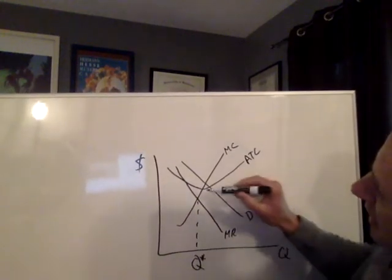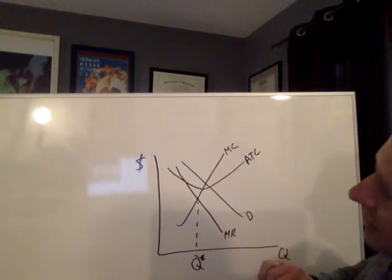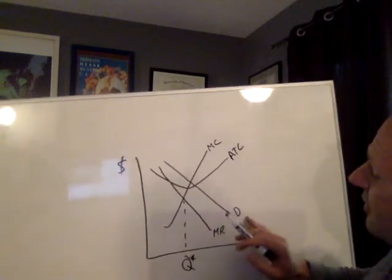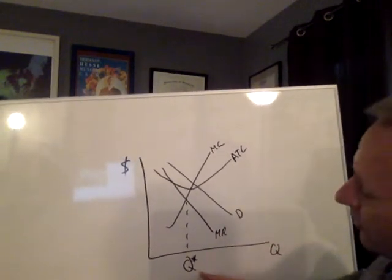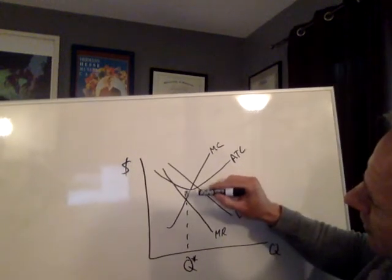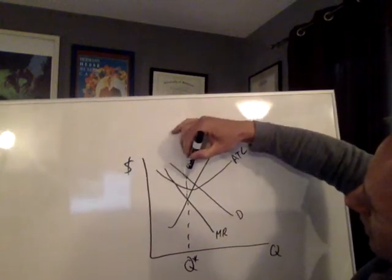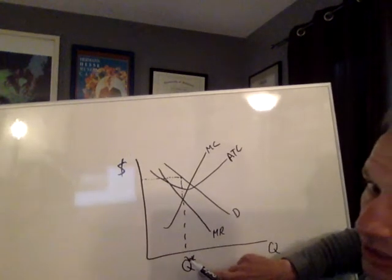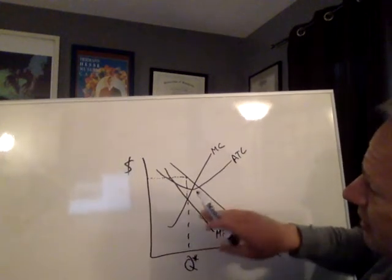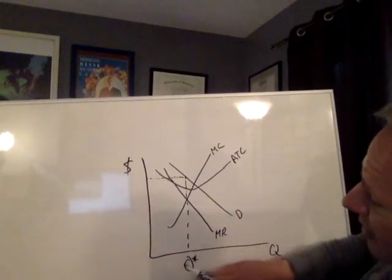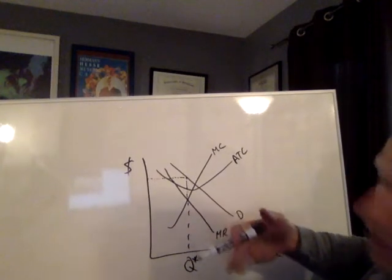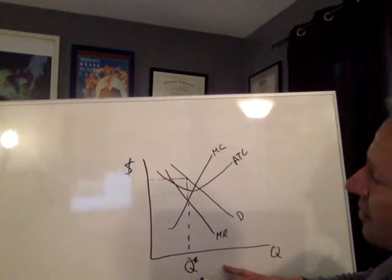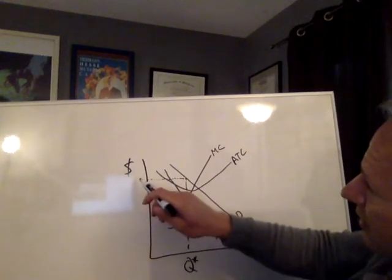What price will the market bear for this level of output? The demand curve is the market demand curve, so for this level of output, consumers are willing and able to pay this price. Why wouldn't the monopolist charge that price? If they charged less they would create a shortage. If they changed their output level, that wouldn't be profit maximizing. This is our equilibrium price.